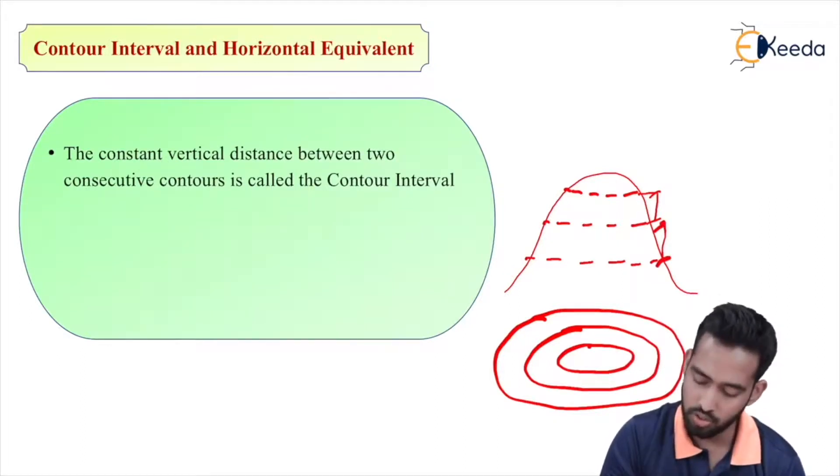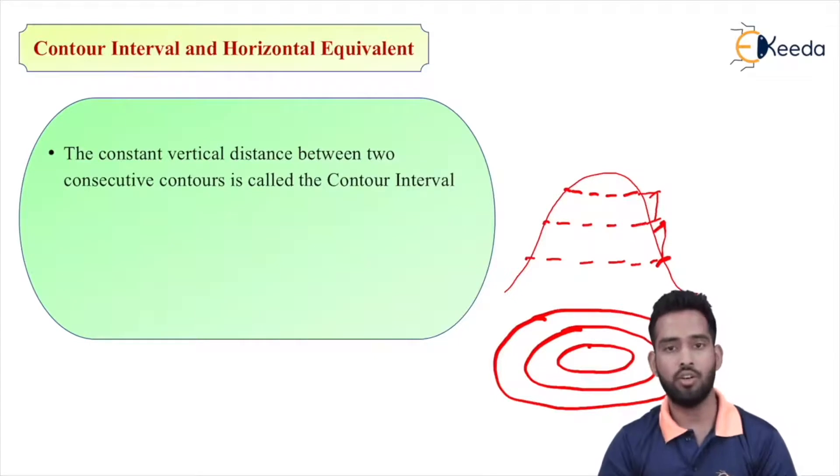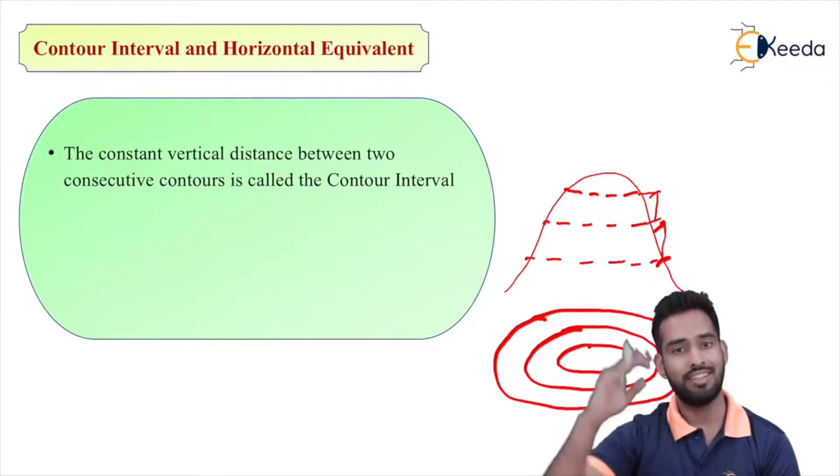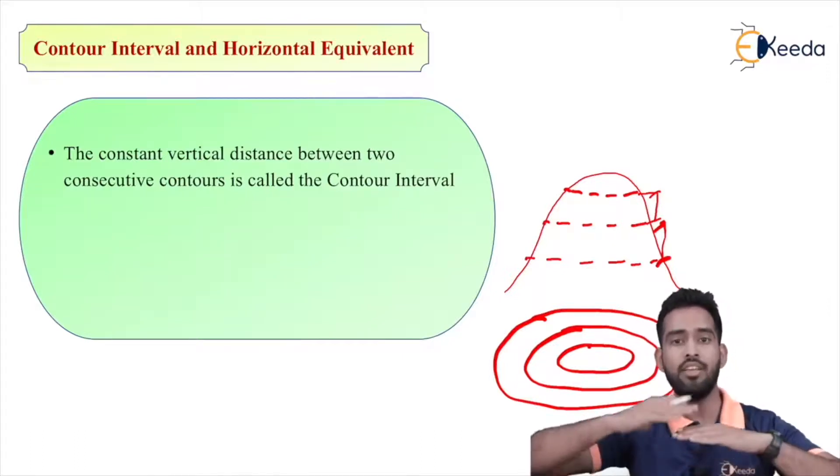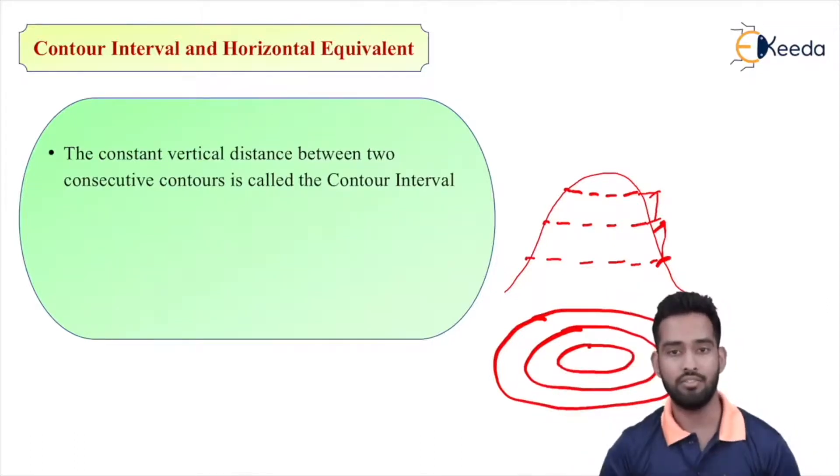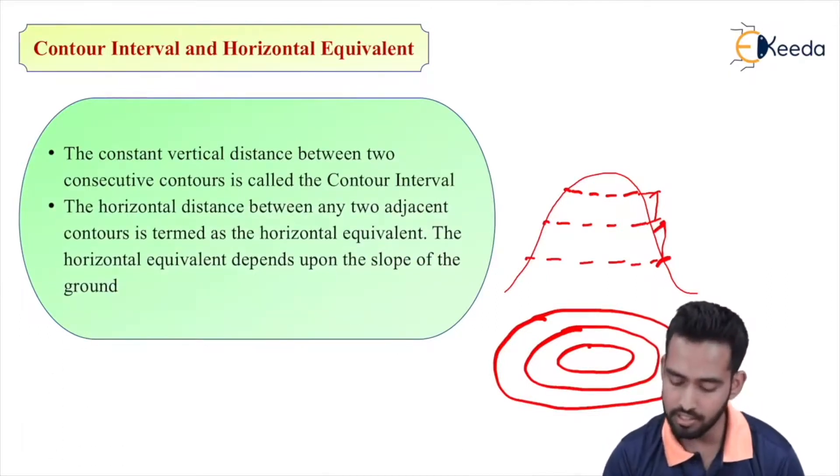And it's not necessary it will be constant throughout - it may vary, or we can keep it constant throughout your survey. For example, contour interval is one meter, so at every one meter of RL we are drawing contours.